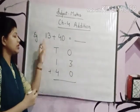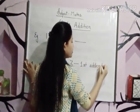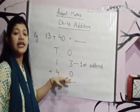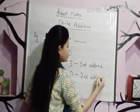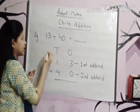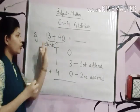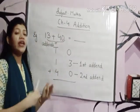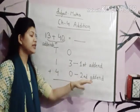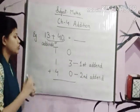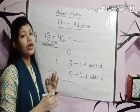The first numeral, that is 13, will be known as the 1st addend. And the second numeral will be called the 2nd addend. So 13 and 14 — these are addends. The first numeral is the 1st addend and the second numeral is the 2nd addend. Now students, what is a sum? The answer which we get after adding is known as the sum.